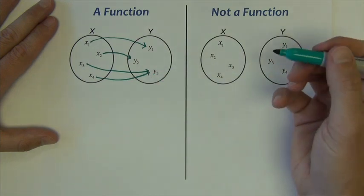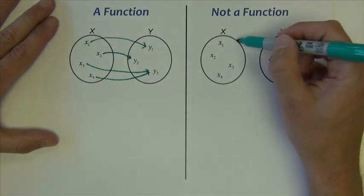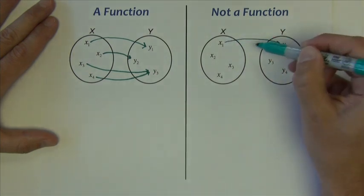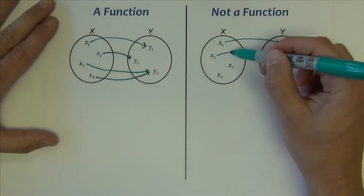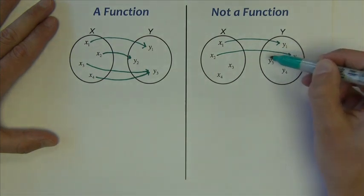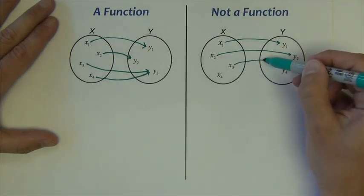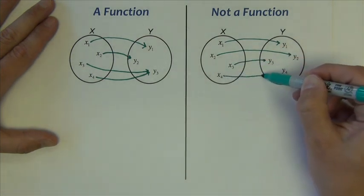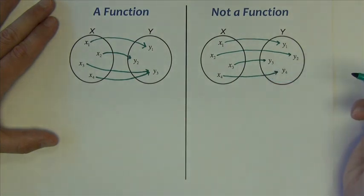On the other hand, let's check this one here. Let's just say x1 goes to y1, x2 to y2, x3 goes to y3, and so forth, x4 goes to y4. Right now, as it's drawn, this is a function.